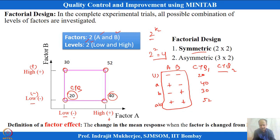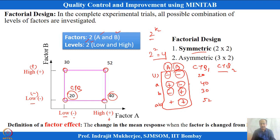When A is at minus level, B is tested at both minus and plus levels, and similarly when A is at positive level. This is a balanced, orthogonal experimentation — every level of A is tested with equivalent levels of B. Each column is independent, which is the peculiarity of this design of experiments. ANOVA analysis will indicate which factor is significant.